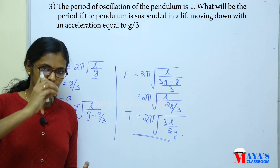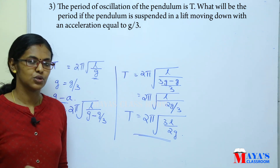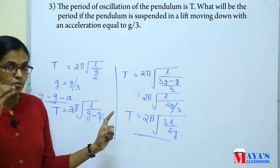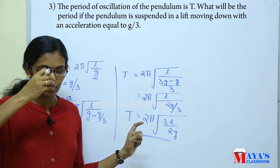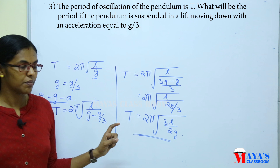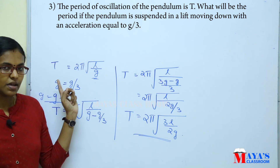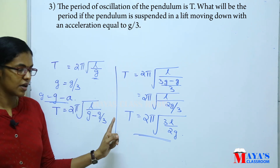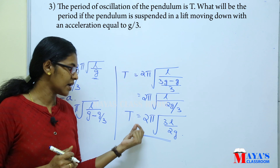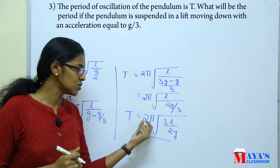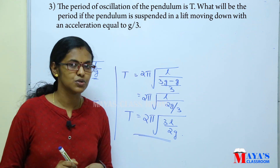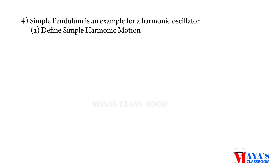So the pendulum is suspended in the lift and the lift is moving down. If it is moving down, the effective gravity is reduced by g/3. Therefore the time period is 2π into root of 3L divided by 2g.